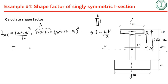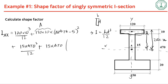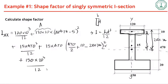For the web, the term is 15 times 470-cubed divided by 12, plus 15 times 470 times the distance squared. That distance is 470 over 2 plus 10 minus 284.74. For the bottom flange, you have 150 times 20-cubed divided by 12, plus 150 times 20 times the distance squared.